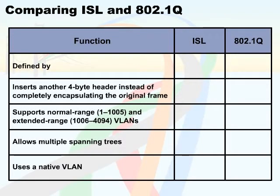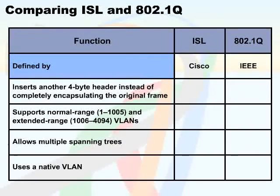Now that you have the high-level overview of ISL versus 802.1Q, we need to compare them in more detail. ISL was introduced by Cisco long before the introduction of the more popular trunking protocol, 802.1Q, by IEEE. So ISL is a Cisco proprietary protocol, whereas 802.1Q is a more standardized protocol. Both protocols add a VLAN header and a VLAN ID field to the original Ethernet frame; however, the way these fields are defined in the protocols differ.